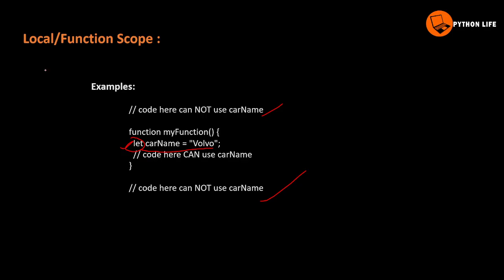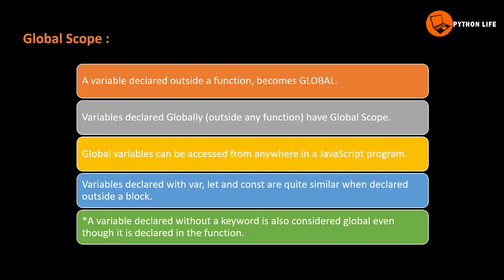So that confirms local scope. Now let's look at the last one: global scope. A variable declared outside a function becomes global. Variables declared globally have global scope — meaning they are declared outside any function and have global scope.